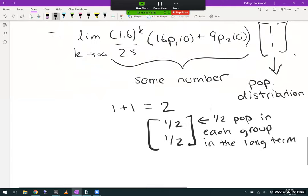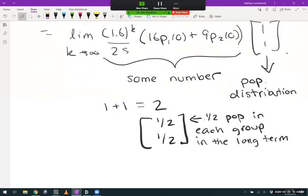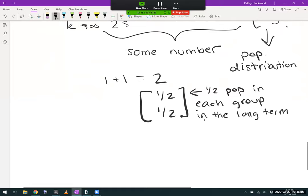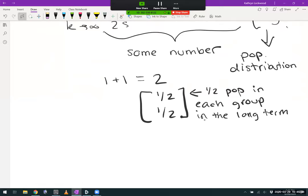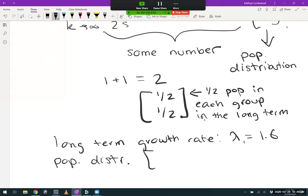Now, a couple of things I want to point out here. One is that the factor out front that's telling us how much it's growing was still 1.6 for each time step. The long-term growth rate is still lambda 1 equal to 1.6. And the long-term population distribution [1, 1] or if you prefer to rewrite it as [1/2, 1/2] after normalization, was our corresponding eigenvector.